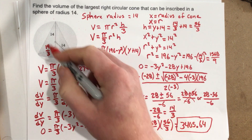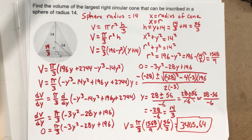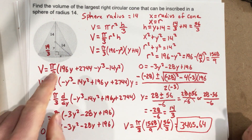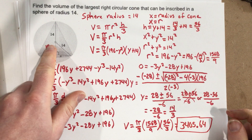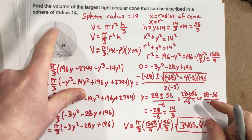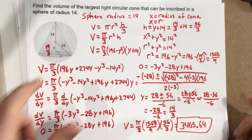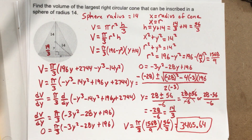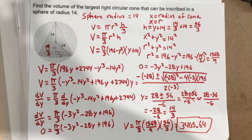So 3,405.64 is the maximum volume for this right circular cone inscribed inside a sphere with a radius of 14. Hopefully that makes some sense.